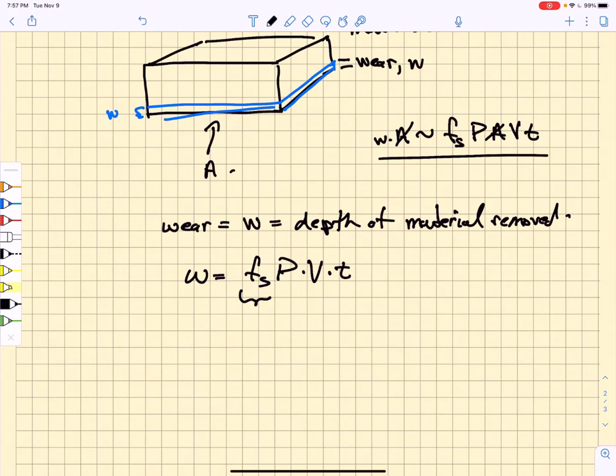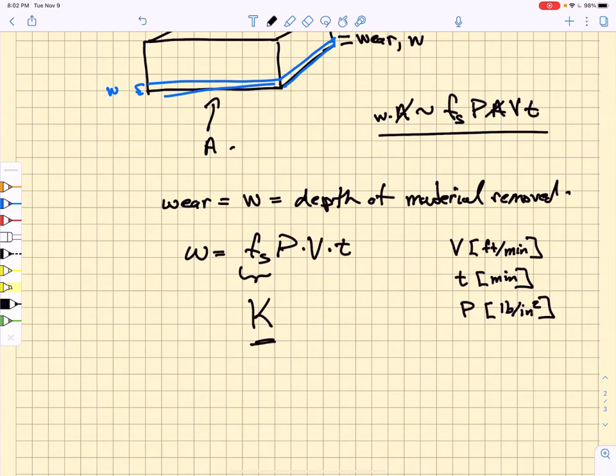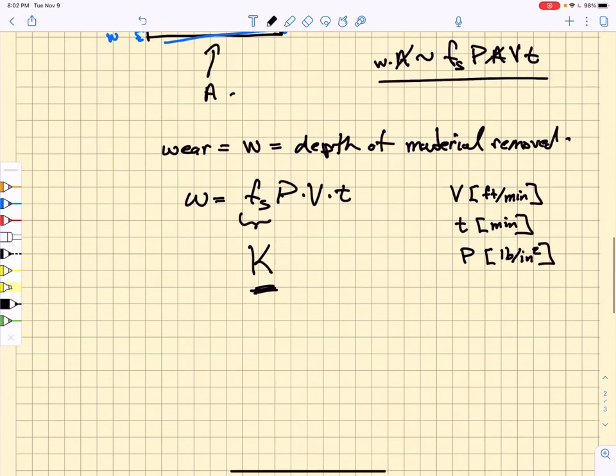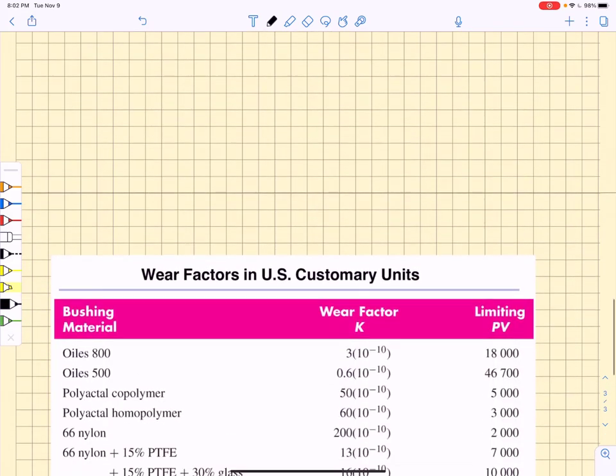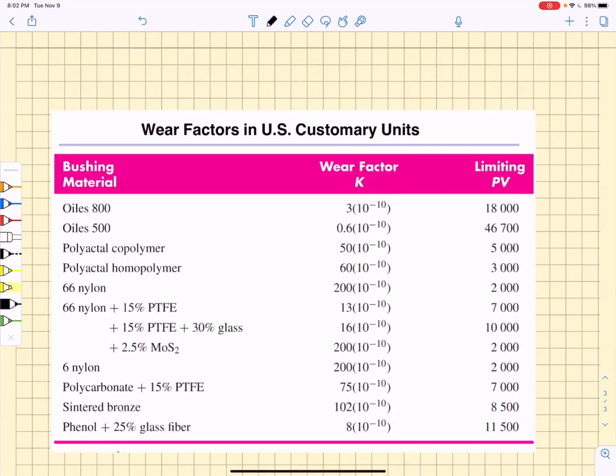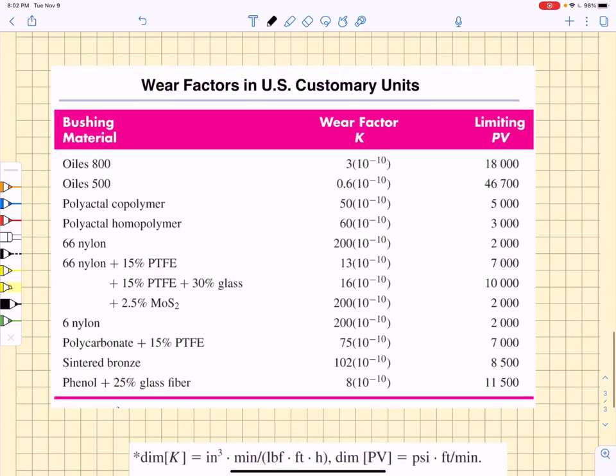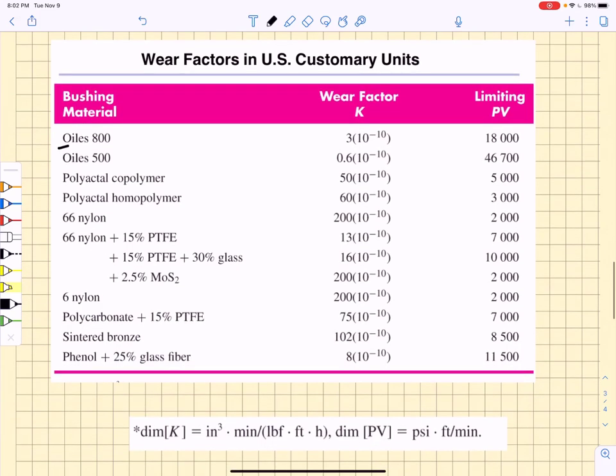What we end up doing is we replace this fs. Instead of a sliding coefficient of friction, we end up replacing that with a material constant which we will call k. Well, I mentioned this factor k that shows up in here, and Shigley provides a table that gives you a number of these factors. It is provided by a company called Oiles, which made these special bushing materials.